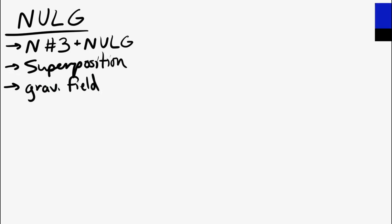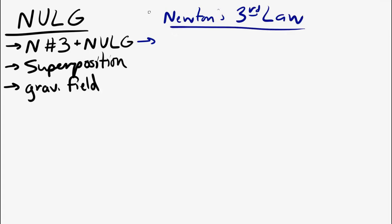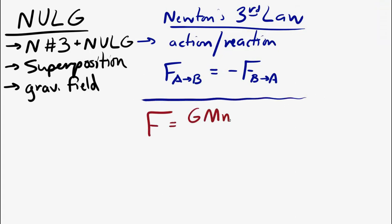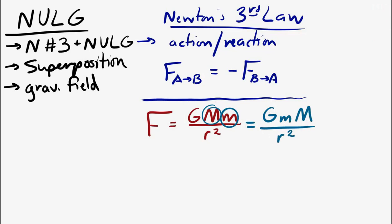Newton's third law says that for every action there's an equal and opposite reaction — or a better way to say it is that the force of A on B is equal and opposite to the force of B on A. And if you look at Newton's universal law of gravitation, the two masses are being multiplied by each other, and that's related to the gravitational force. If you change the order of the two masses in that equation — if you switch which one is feeling the force and which one is causing the force — it doesn't change the magnitude of the force.